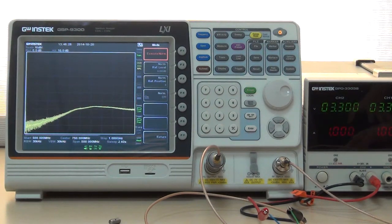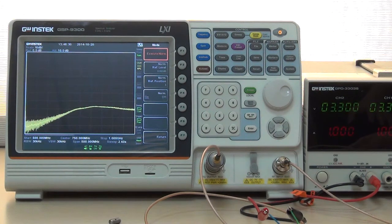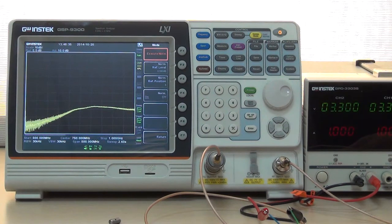The Scalar Network Analysis test results show the noise amplifier gain between 500 MHz and 1000 MHz.